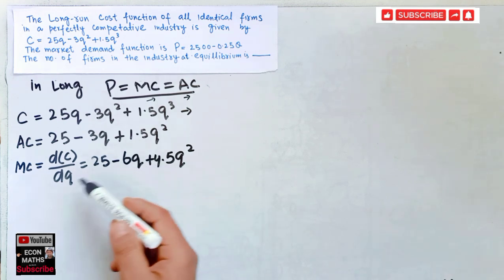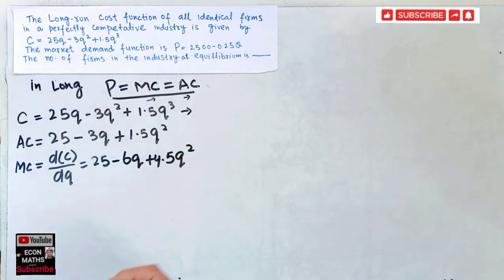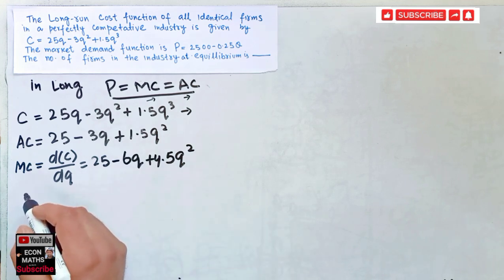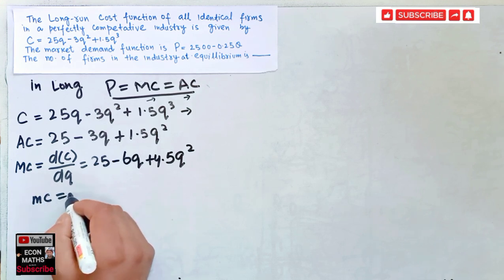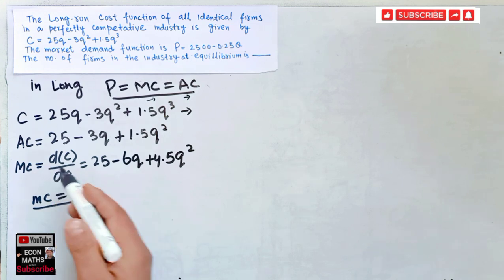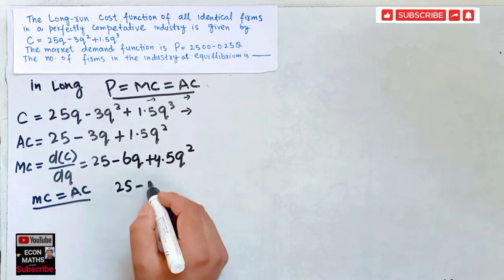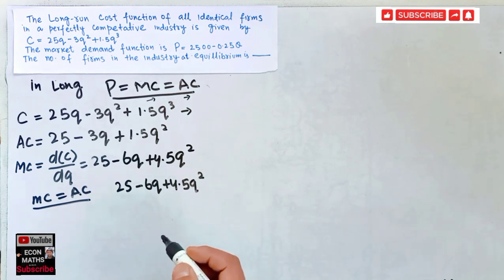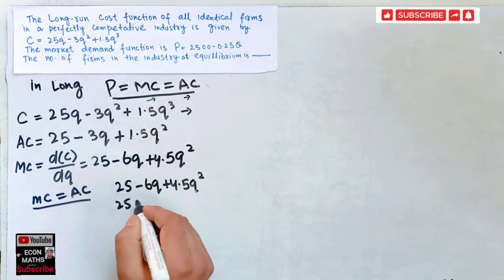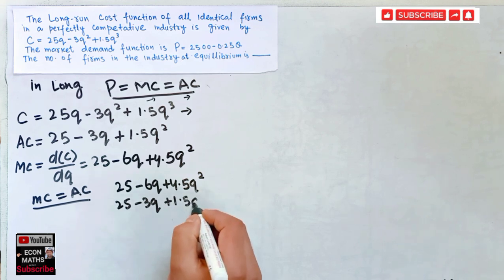Now we will equate marginal cost and average cost. Setting marginal cost equal to average cost: 25 − 6q + 4.5q² = 25 − 3q + 1.5q².